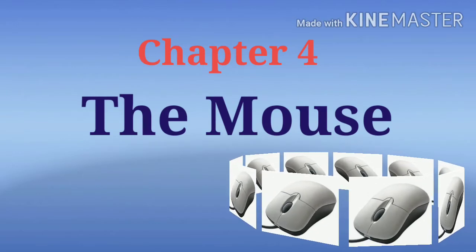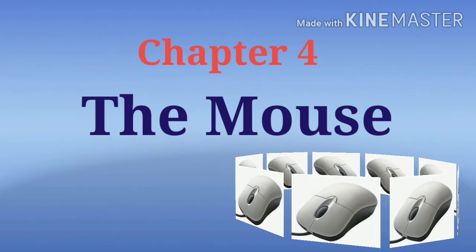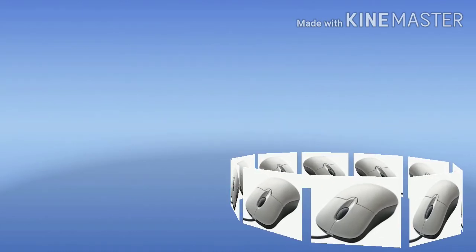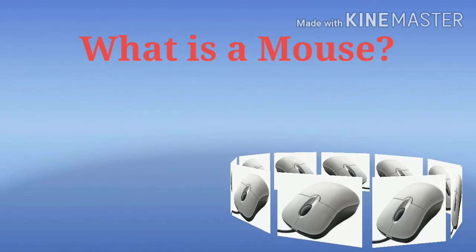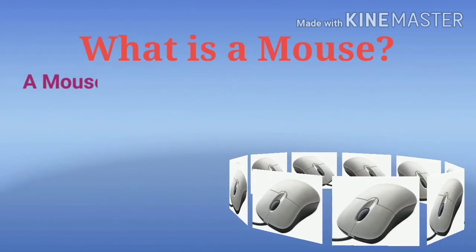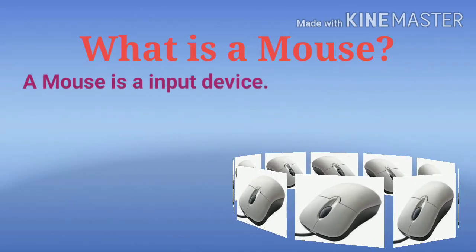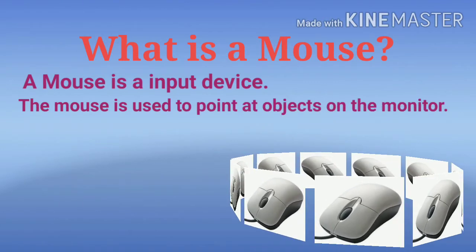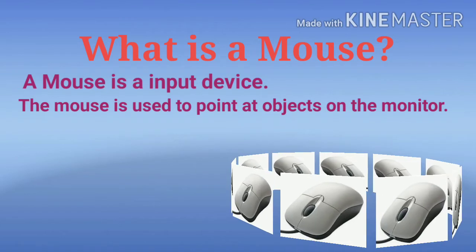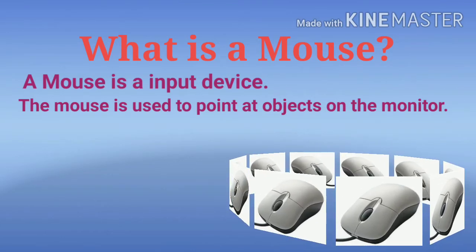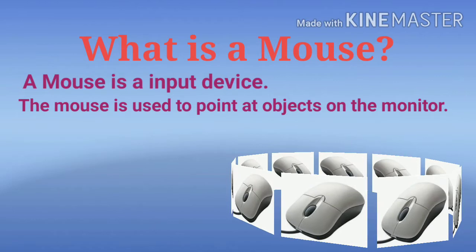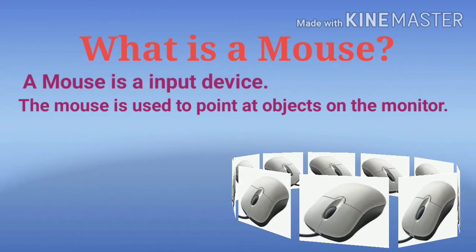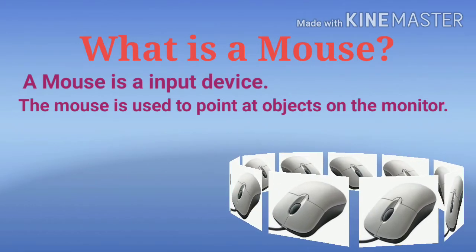Chapter 4, the mouse. So students, before starting the chapter, we will learn about what is a mouse. A mouse is an input device and the mouse is used to point an object on a monitor. You can see in your monitor an arrow-like pointer — this is your mouse pointer.